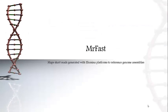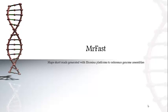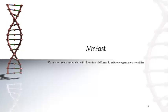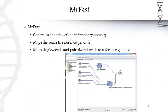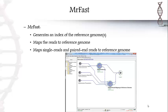Mr. Fast is a tool that's great for aligning short reads with the reference genome. Mr. Fast is a helpful tool in that it generates an index of the reference genome. It also maps the read to a reference genome and maps single reads and paired-end reads to a reference genome.